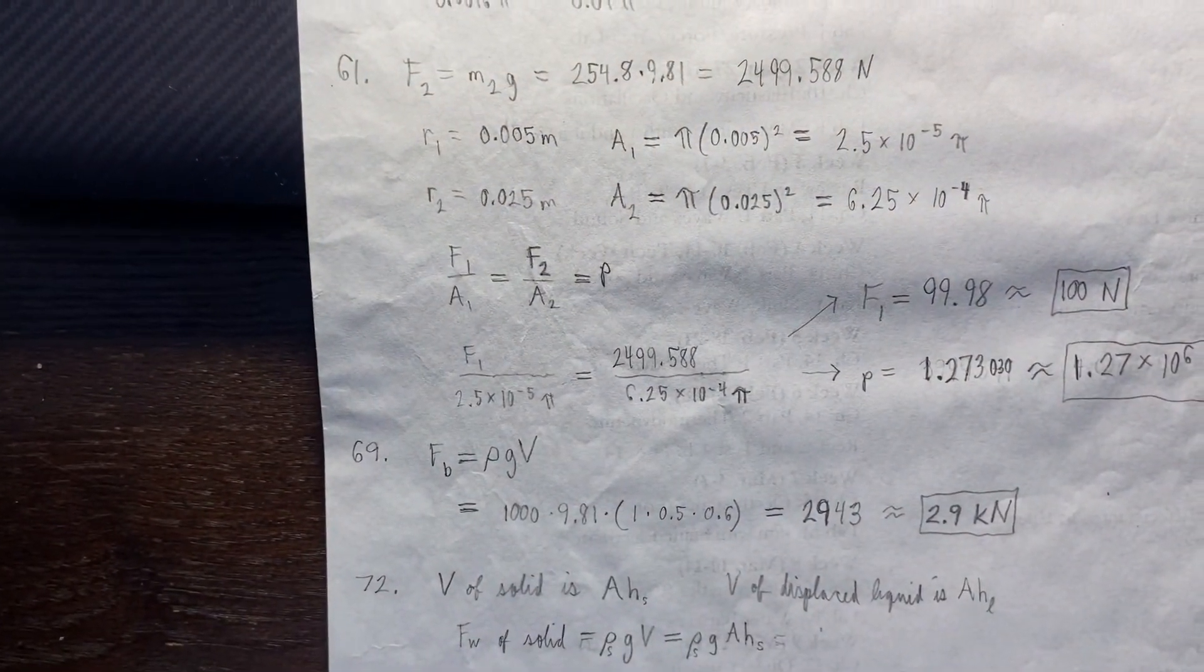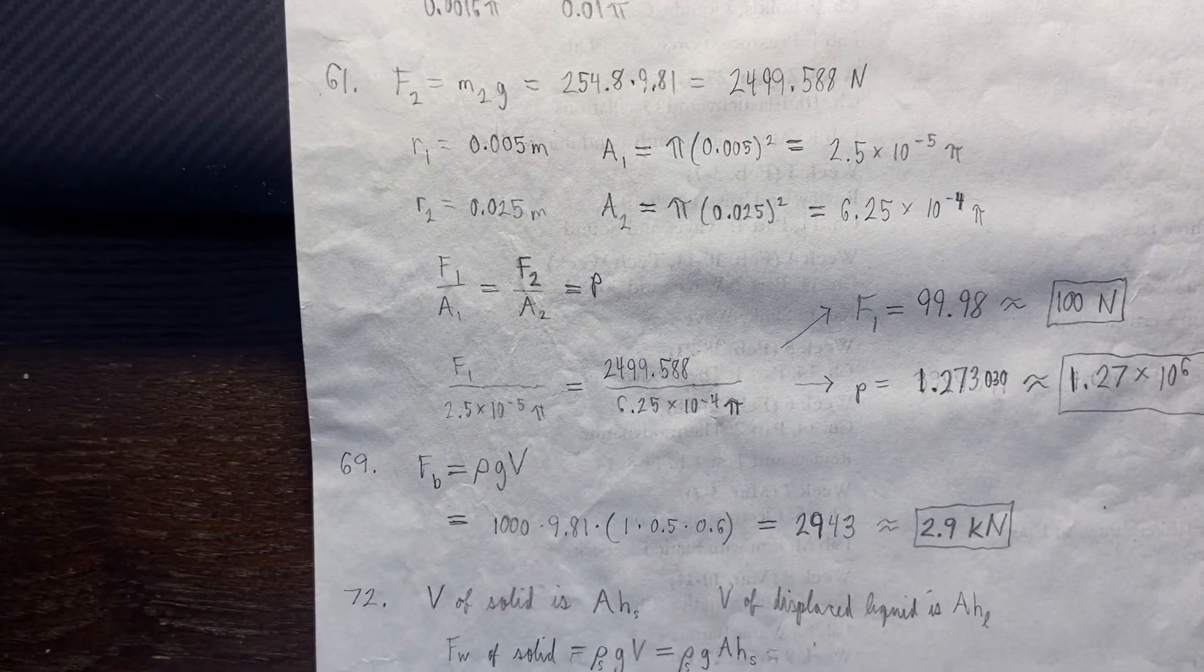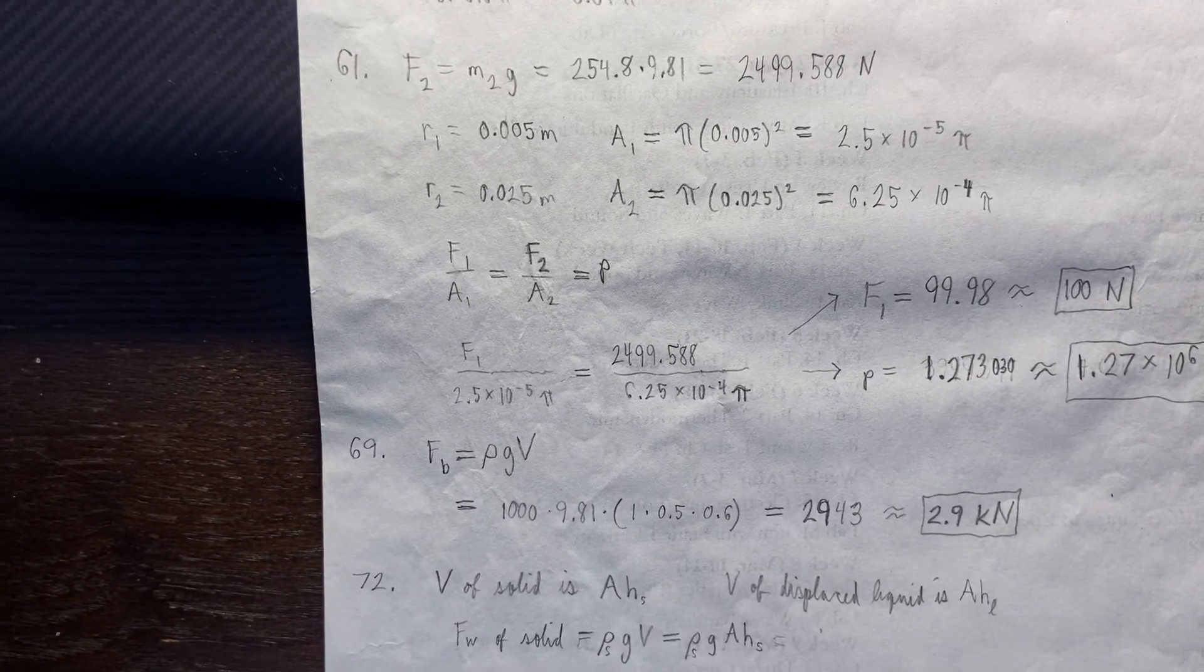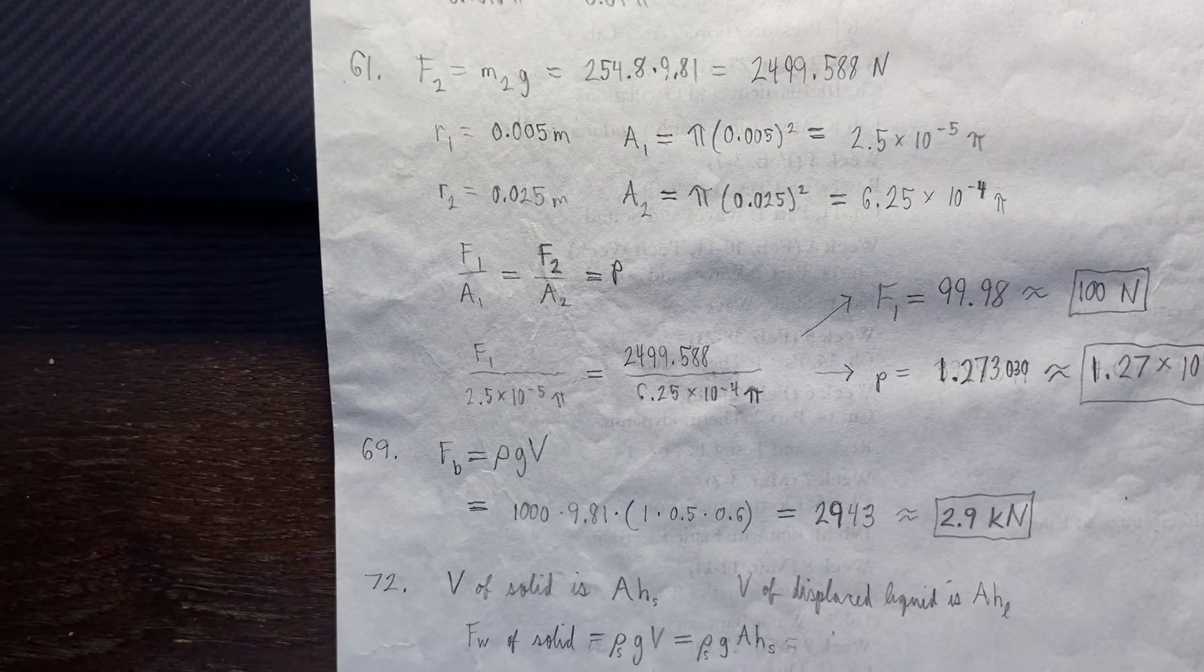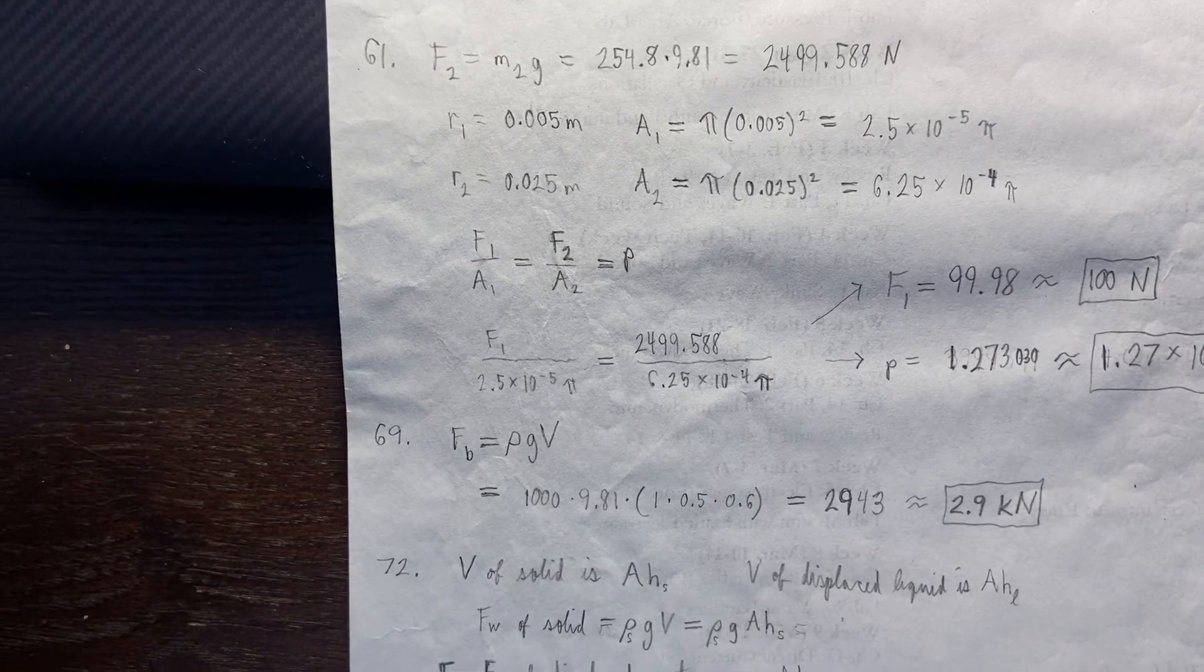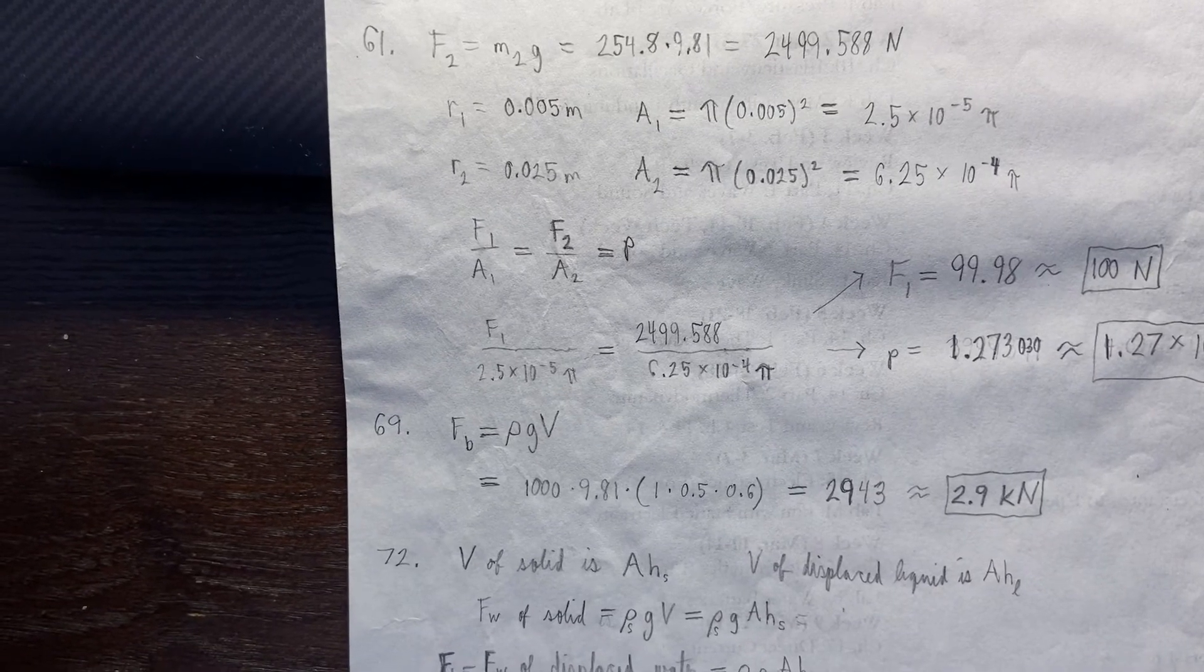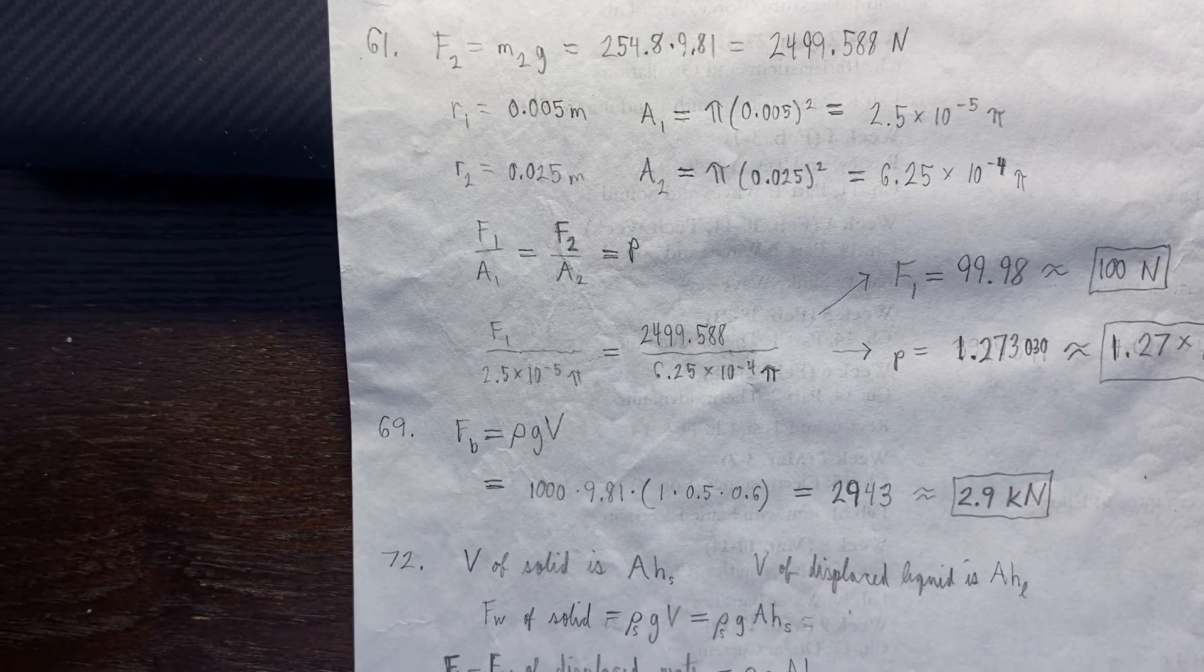69, just a simple problem with buoyant force. So buoyant force is rho gv. And I have 1000 times 9.81 times 1 times 0.5 times 0.6, and I get 2.9 kilonewtons. Keep in mind when you're doing buoyant force that the rho gv we're talking about, that's the rho of the displaced liquid, and it's the v of the displaced liquid. You're not thinking about the density or volume of the solid that's submerged or floating even. We're talking about displaced liquid, and this is Archimedes' principle.